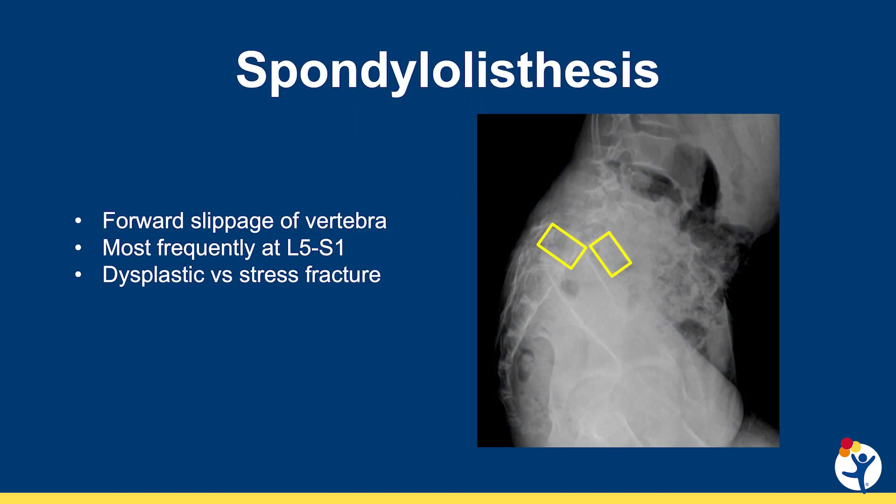For some background, spondylolisthesis is forward slippage of one vertebra on another. In pediatrics and adolescence, we primarily see this at L5-S1, as opposed to in adults with degenerative spondylolisthesis where it's more common at L4 and L5.